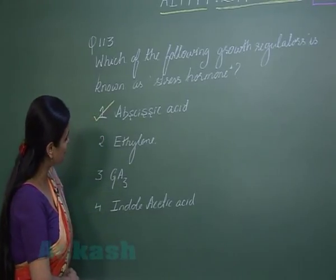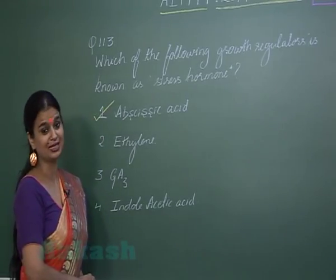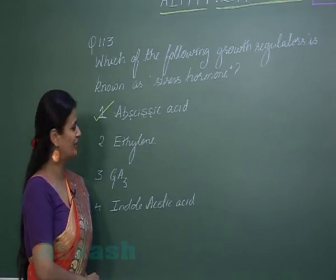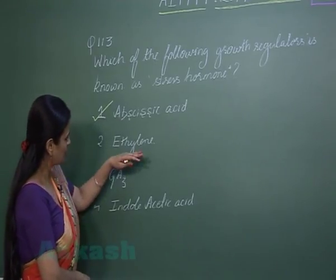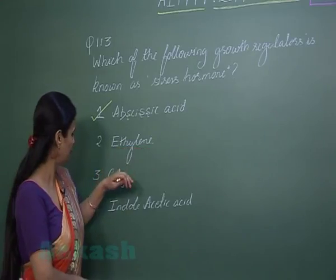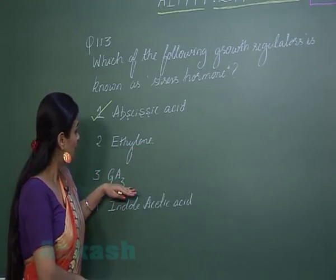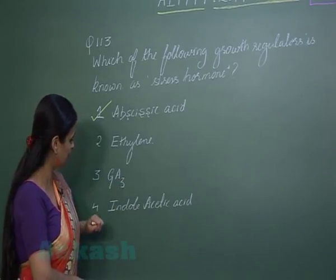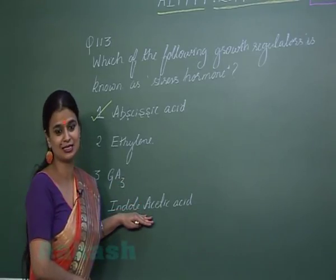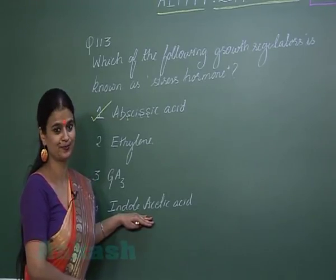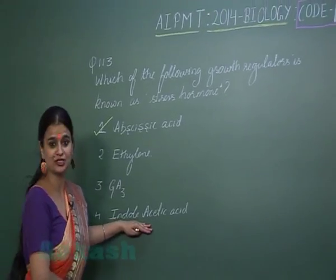The main function of abscisic acid is preparing the plant to tolerate stress conditions by causing stomatal closure. Similarly, one main function of ethylene is ripening of fruits; gibberellic acid is involved in seed germination; and indole acetic acid, that is auxin, is responsible for apical dominance.